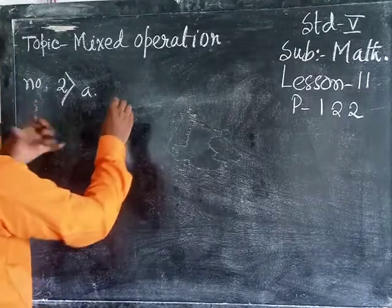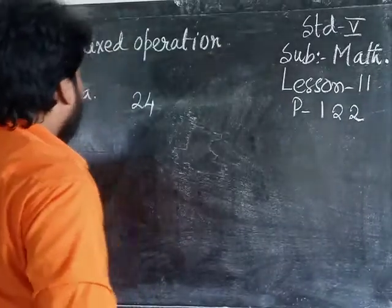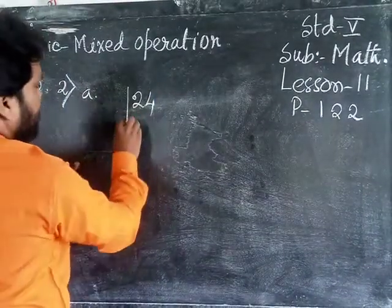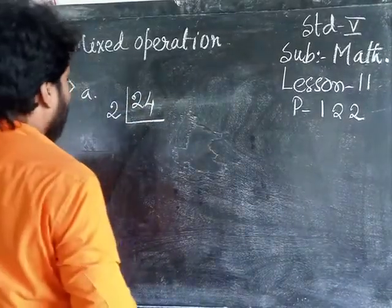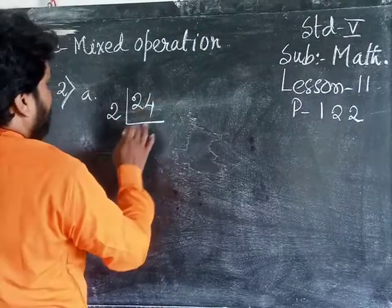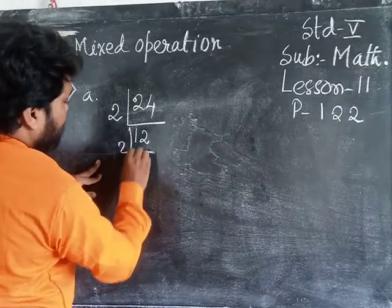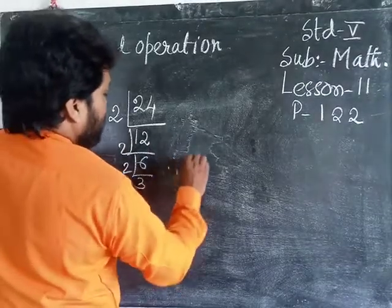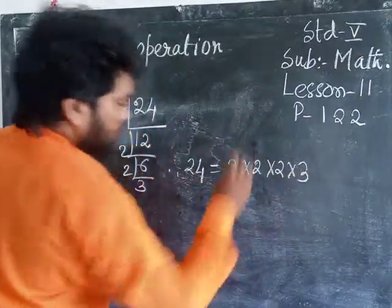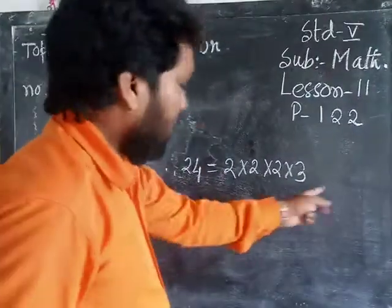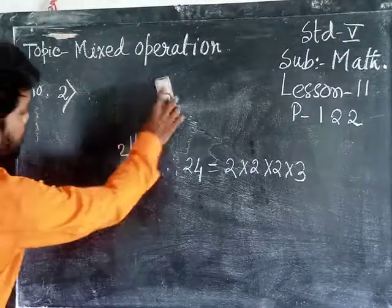There are so many examples, few of them I am solving. Prime factorization, that means 24 will be factorized by prime numbers: 2, 12, 2, 6, 2, 3. So 24 equals 2 into 2 into 2 into 3. All the numbers are prime, 2 and 3.